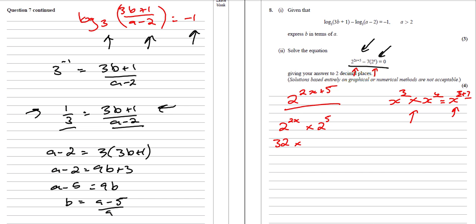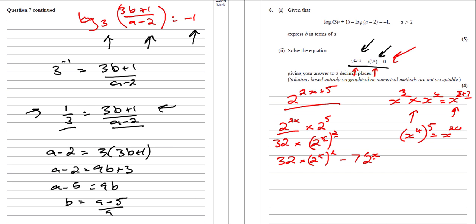Now 2^(2x) can be written as (2^x)². The reason we can do that — going back to GCSE — if we have x to the power of 4 to the power of 5, we multiply the powers to get x to the power of 20. So 2^(2x) is the same as (2^x)² because multiplying x by 2 gives 2x. So if we replace everything and rewrite it, we've got 32 times (2^x)² minus 7 lots of 2^x equals 0.